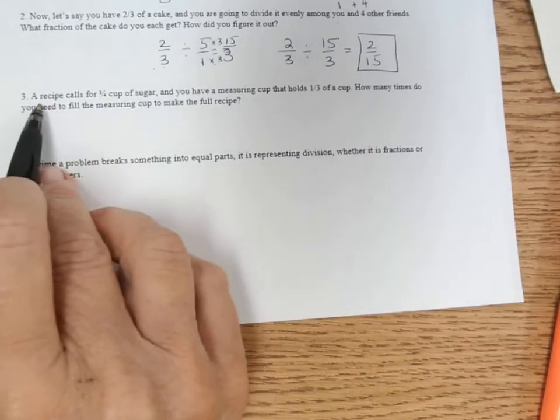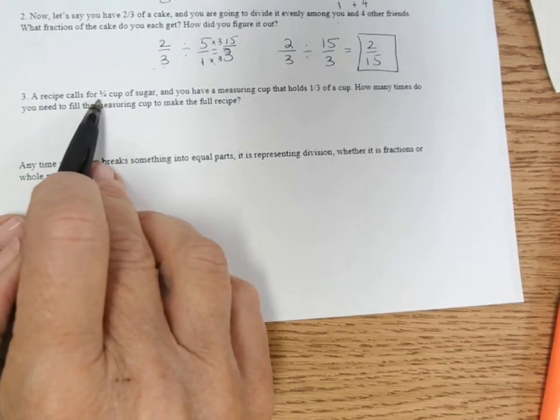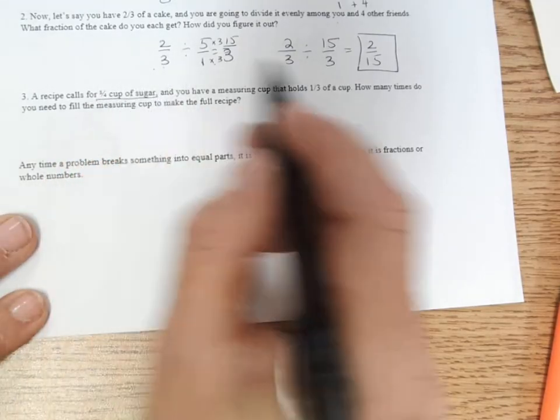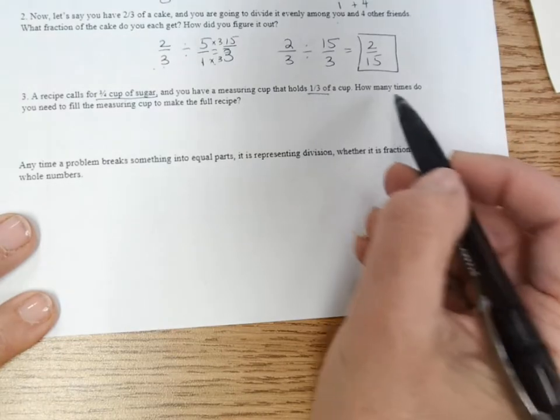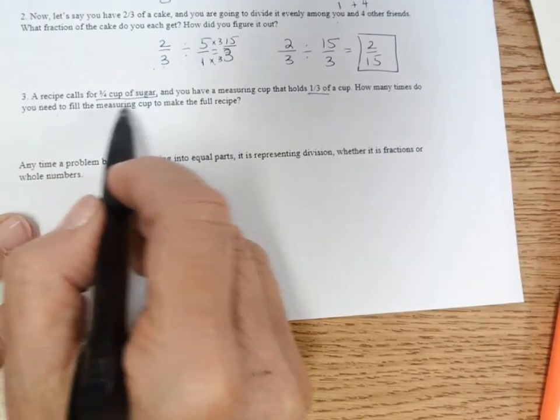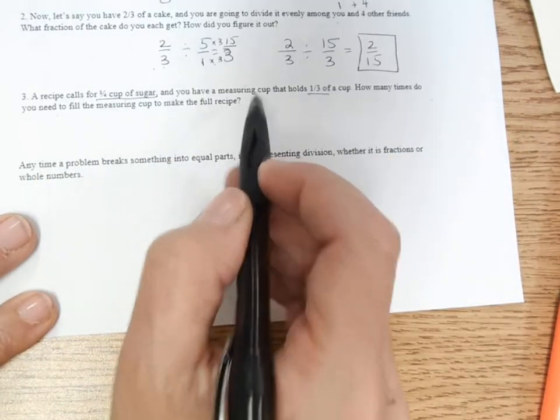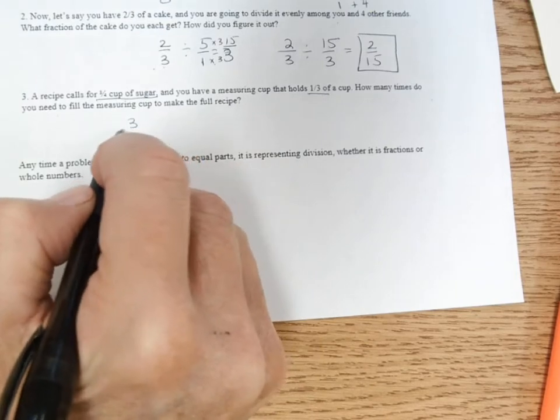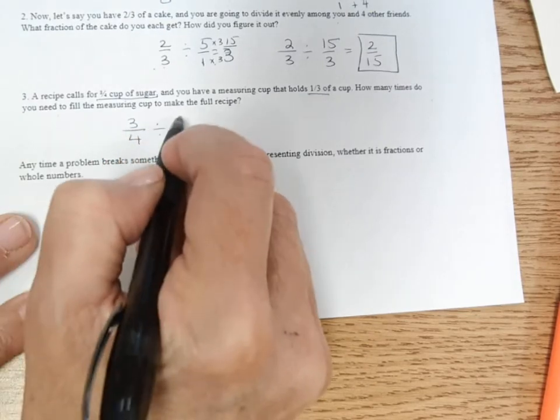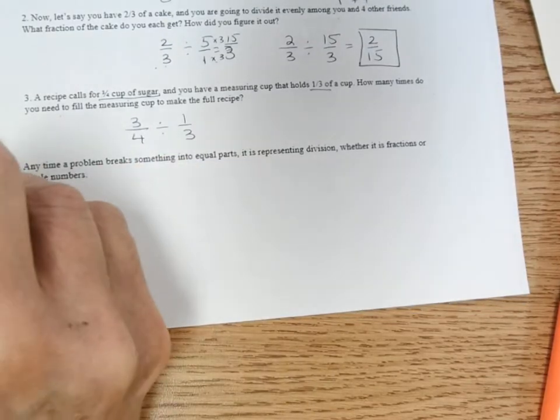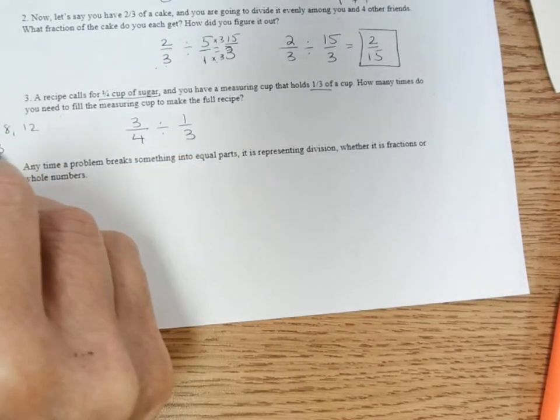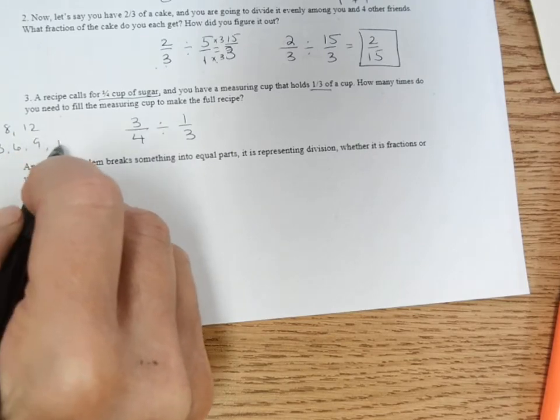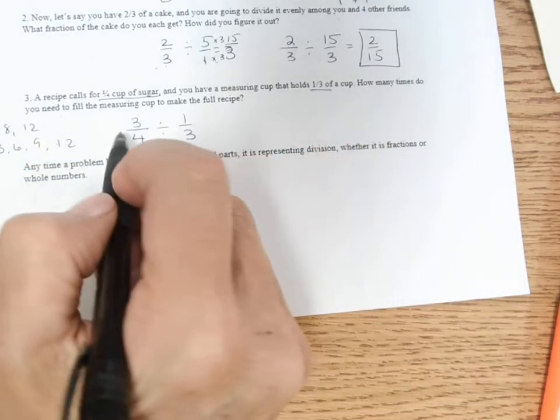Finally, a recipe calls for three-fourths of a cup of sugar. You have a measuring cup that holds one-third of a cup. How many times do you need to fill the measuring cup to make the full recipe? So we're going to do three-fourths divided by one-third. So I need to think: four, eight, twelve; three, six, nine, twelve. There's my common denominator.